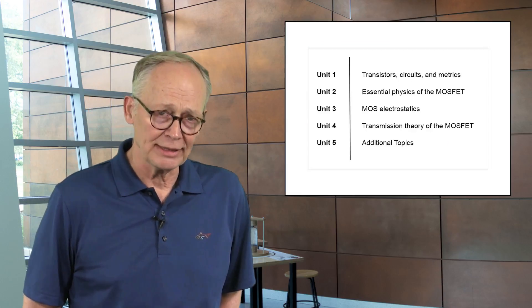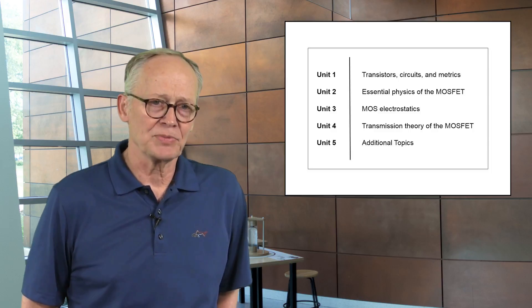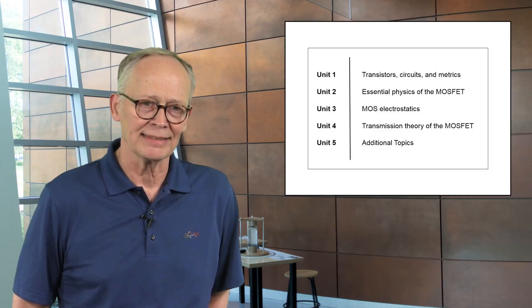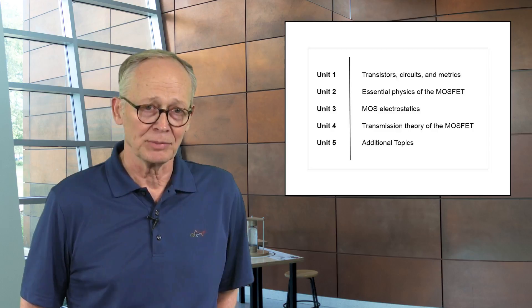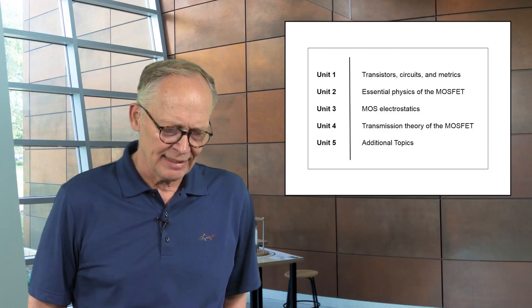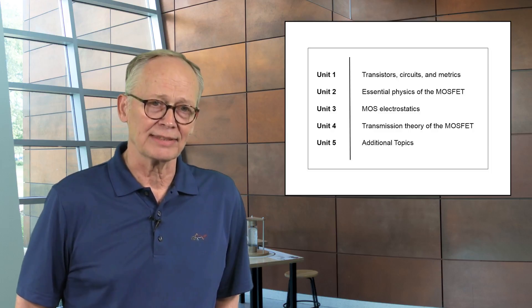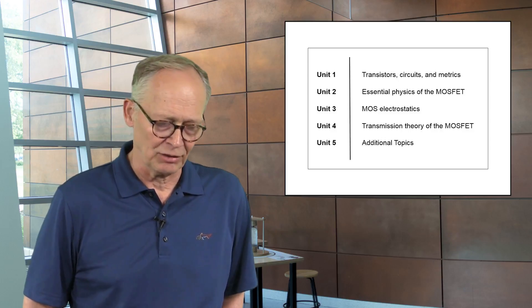The course has 5 units. The first is just a description of the transistor as a black box. If we apply voltages to the terminals, what currents flow, and then how those IV characteristics impact digital and analog circuits.